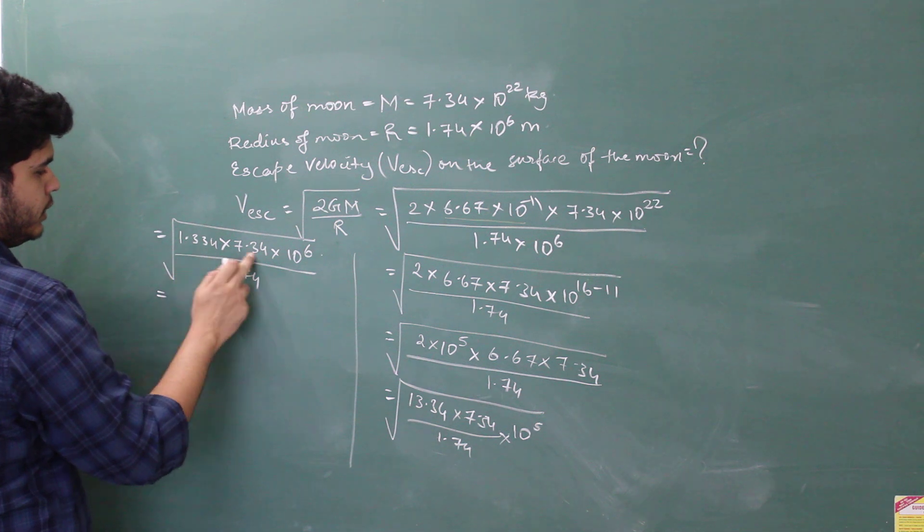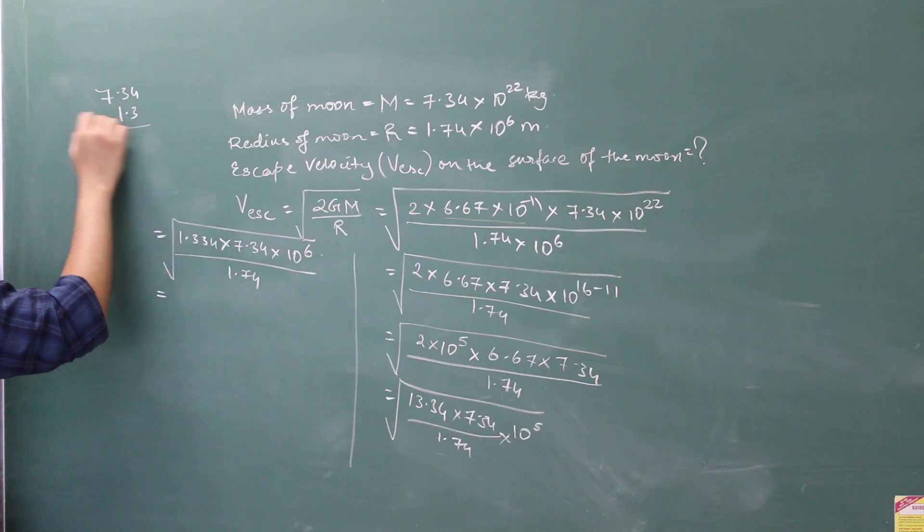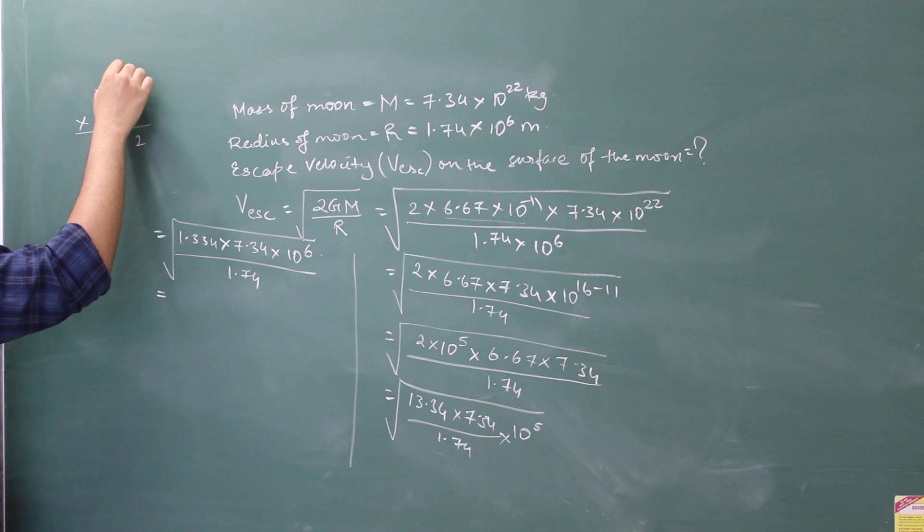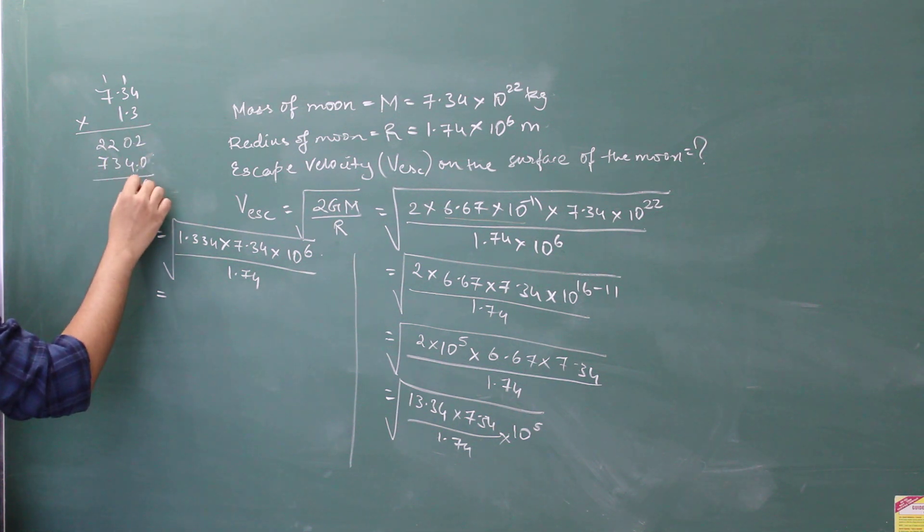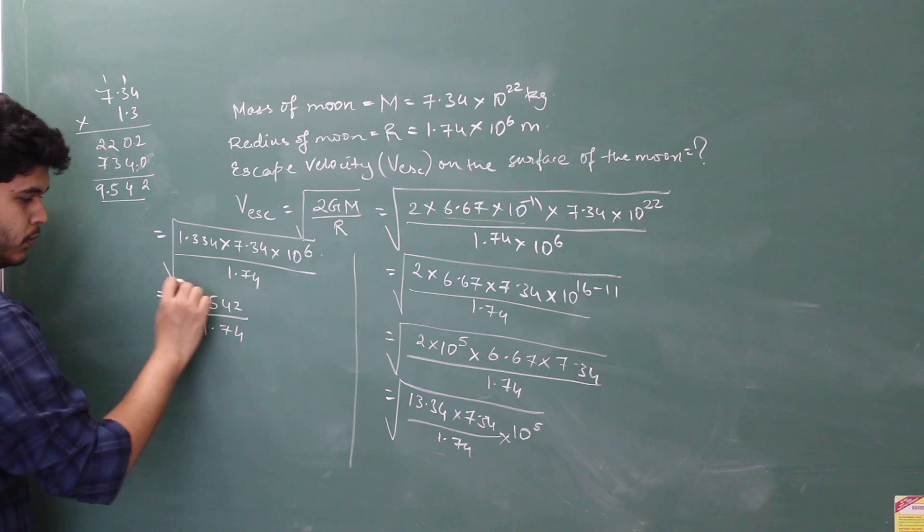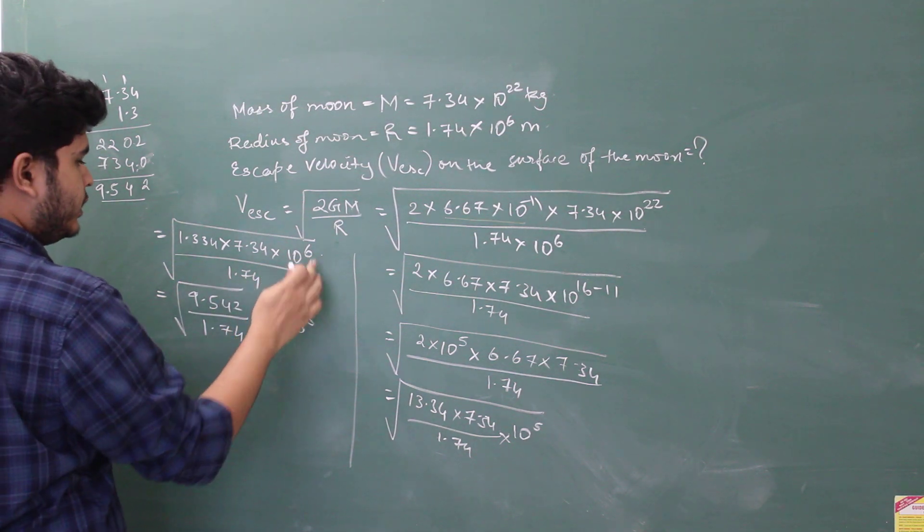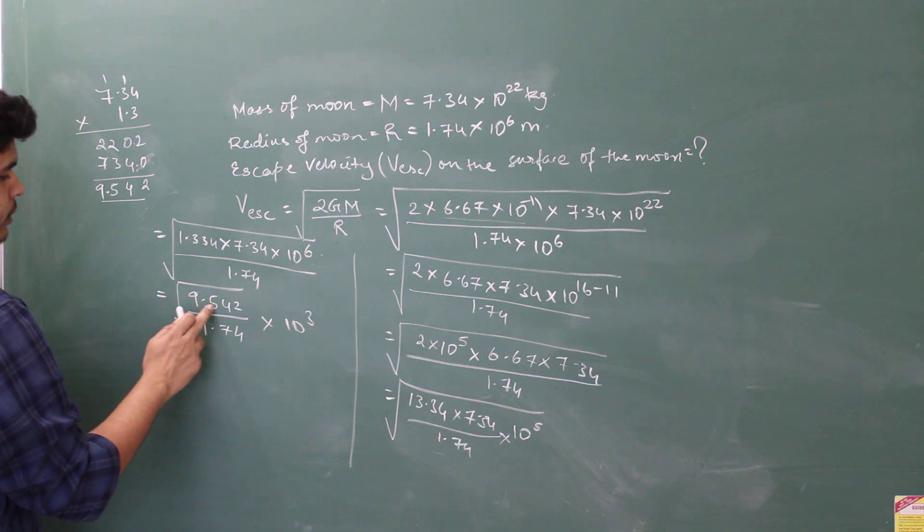Now let's multiply these 2 quantities. It would be, let's keep it simple. 7.34 and 1.34. Approximately, let's see how much it comes. So here you have 1 carried 0 and again 1 carried 22. 0, 0734. This is called... So 2, 4, 5, 9. And then there are 2 decimals. That becomes 9.542. That's 9.542 divided by 1.74 × 10^3. So it becomes 10^3.